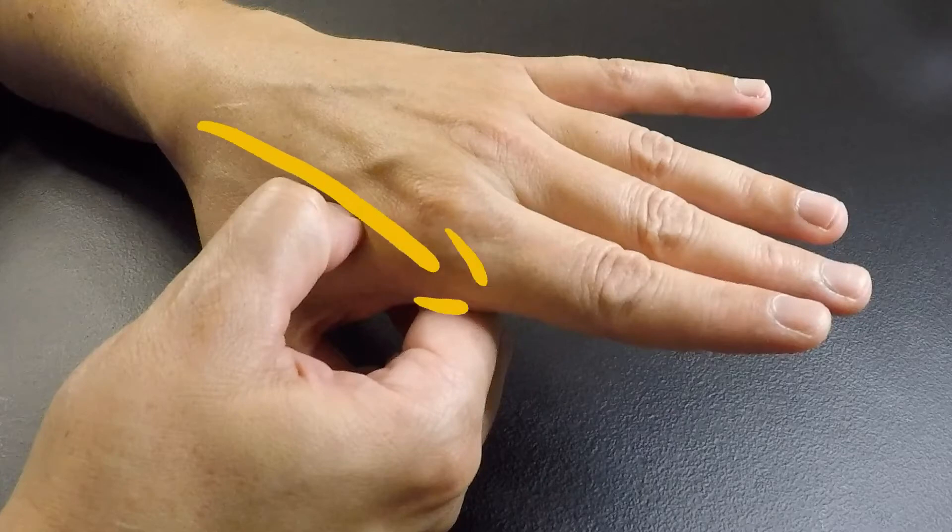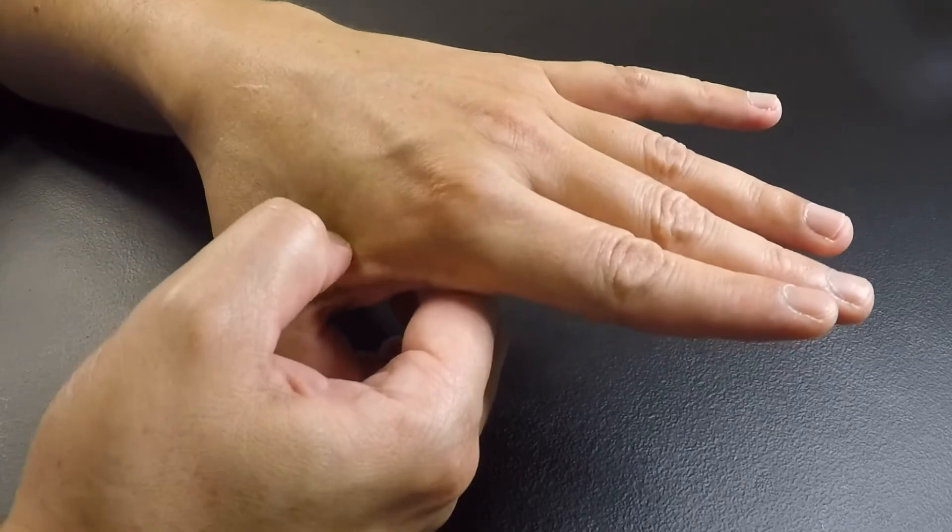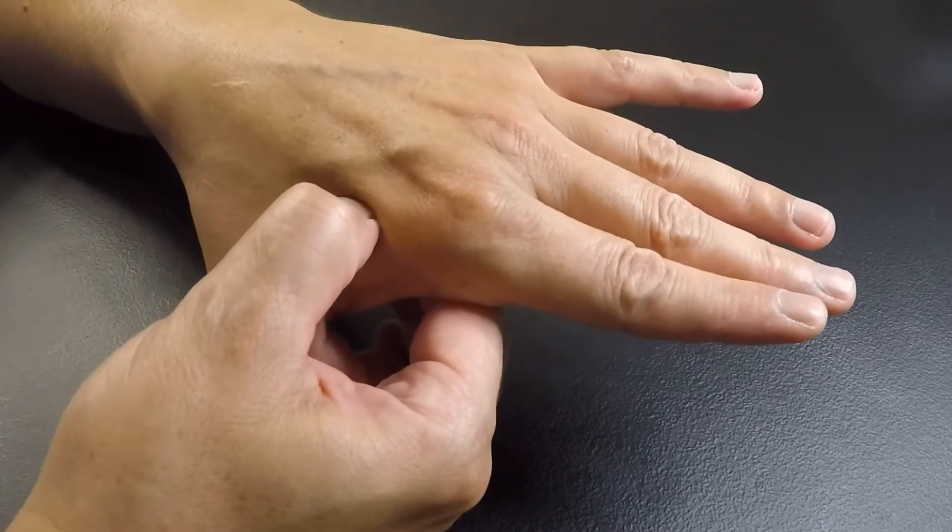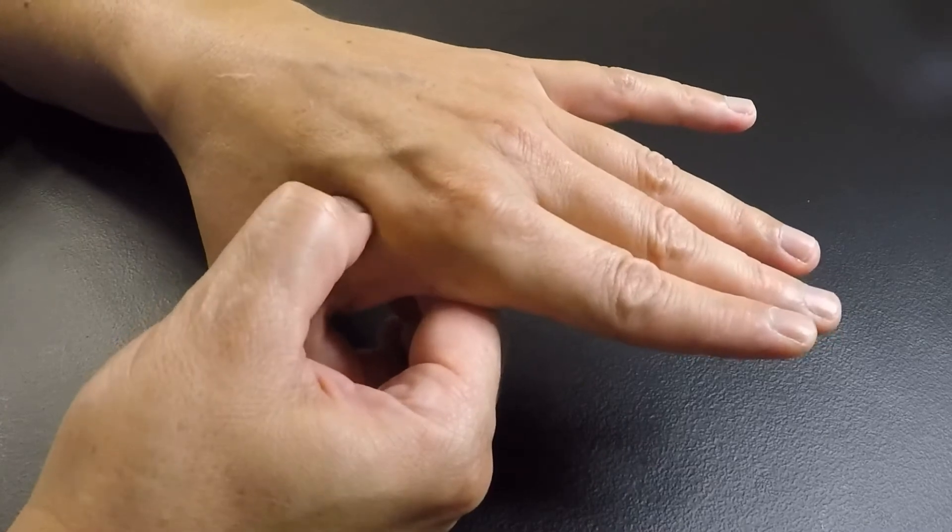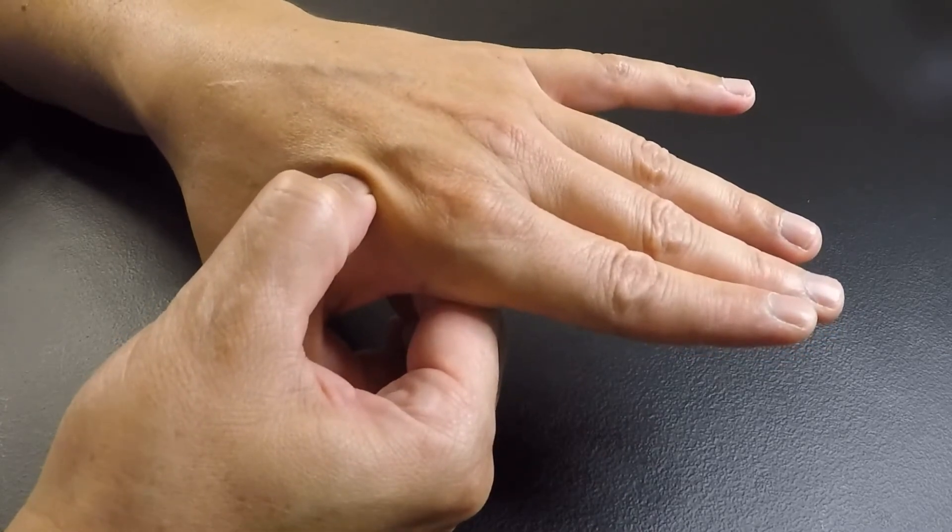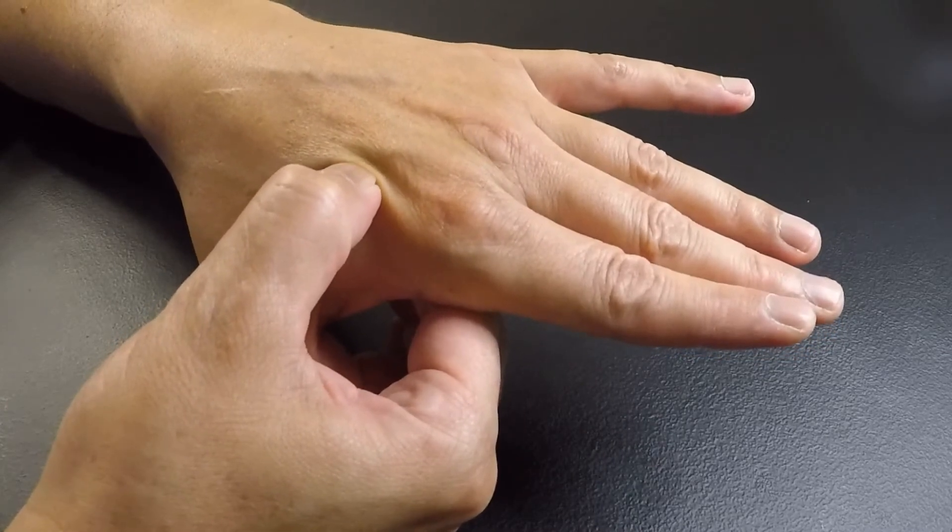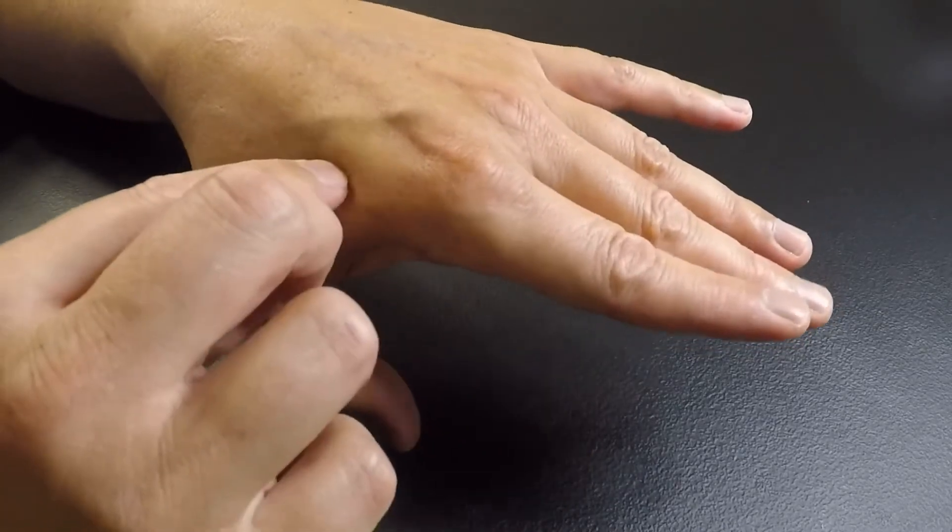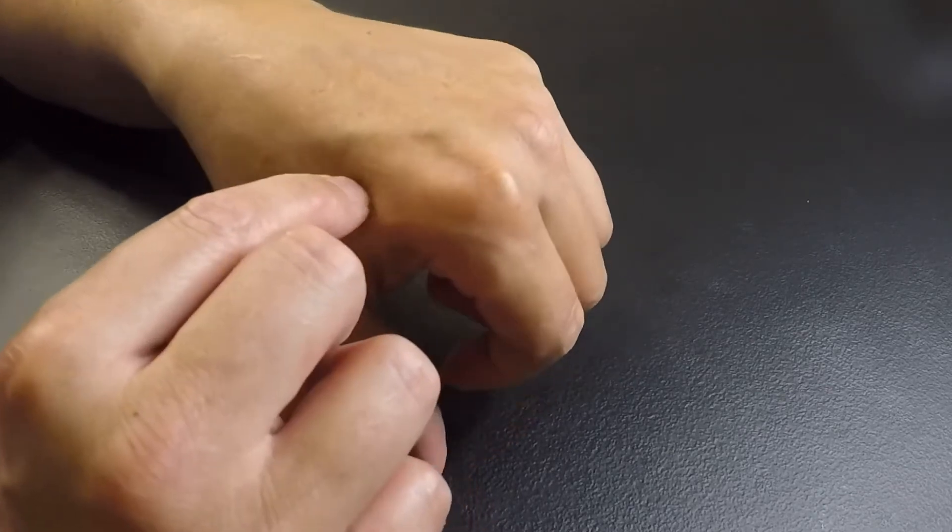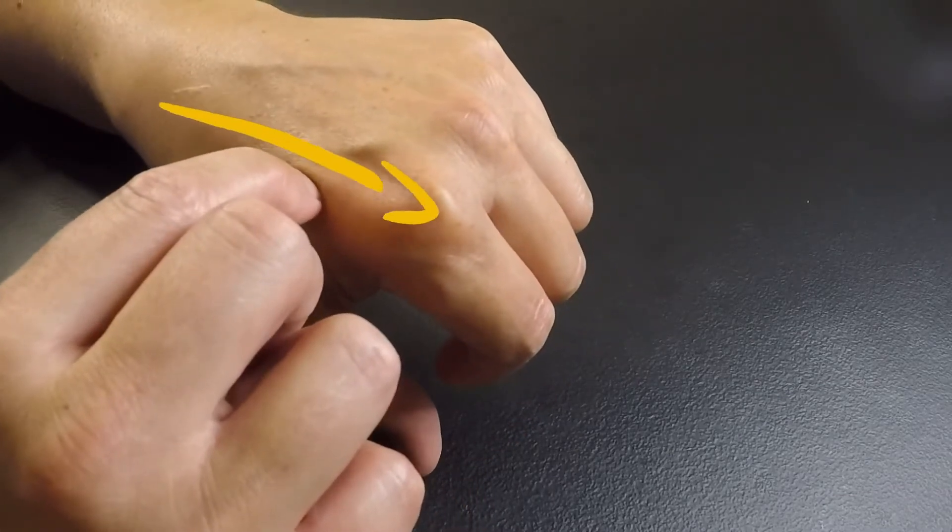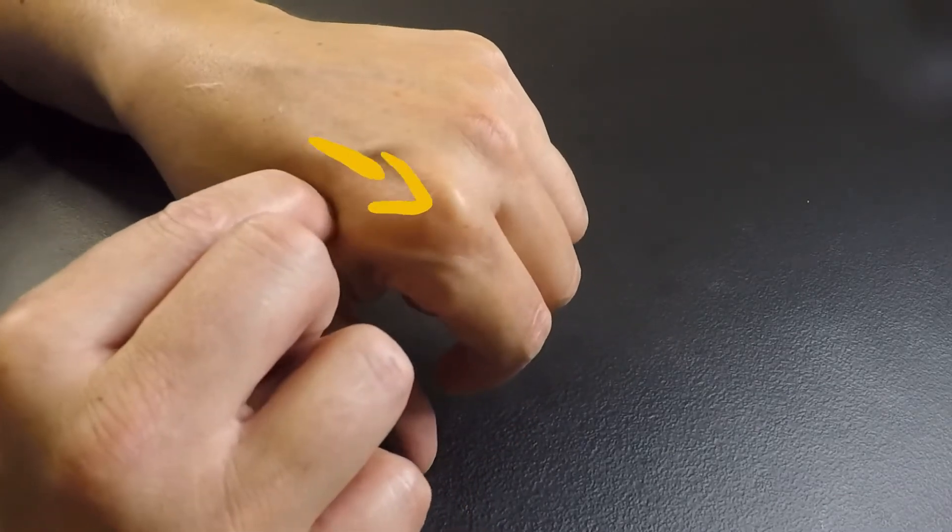If we use our fingernail to dig in and flick up towards the bone, we'll feel the superficial radial nerve branch to the first finger click over our fingernail. May take a couple of attempts, but what you want to do is trap the nerve between your fingernail and the bone. So here's another method of doing it using the index finger.